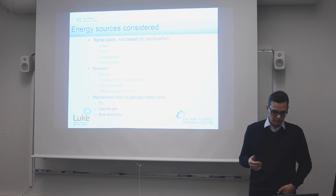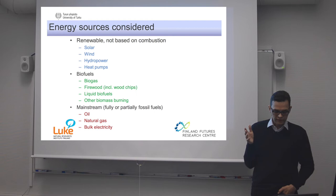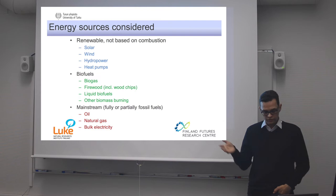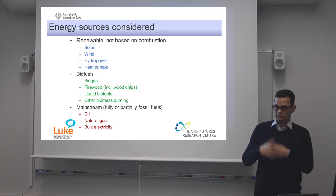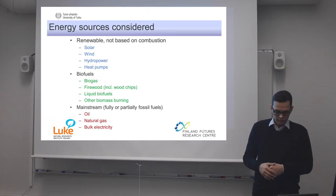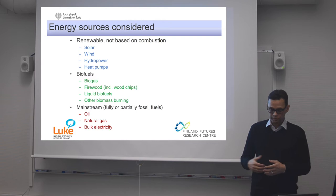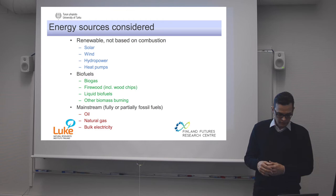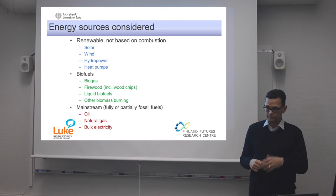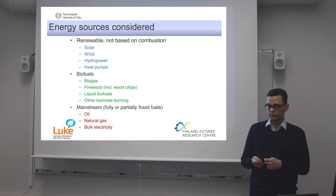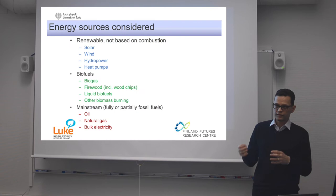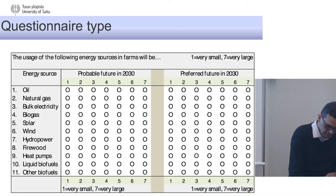The energy sources that we consider here: we have four renewable energy forms that are not based on burning something — solar energy, wind energy, hydropower, and heat pumps. Then we have the biofuels, which are burned: biogas, firewood, liquid biofuels, and other biomass burning. And then some mainstream technology, fully or partially fossil fuel dependent: oil, gas, and then bulk electricity — the normal electricity you get with no particular green electricity contract from the national grid.